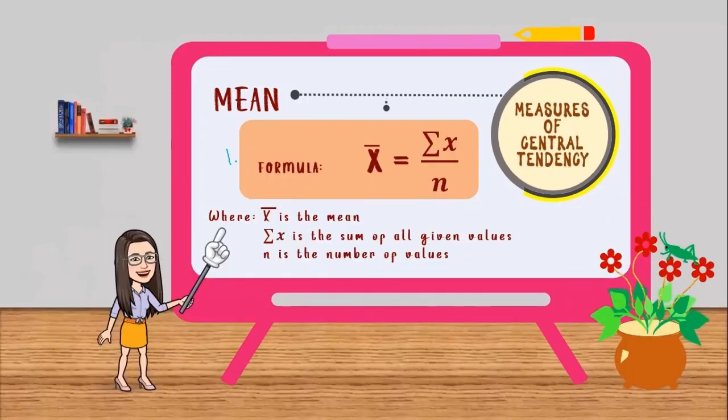The notations in the formula means that x bar is the mean, and summation of x is the sum of all given values, and n is the number of values. Hence, we can read this formula as mean is equal to summation of x over n. Now let's try to solve a given set of data.